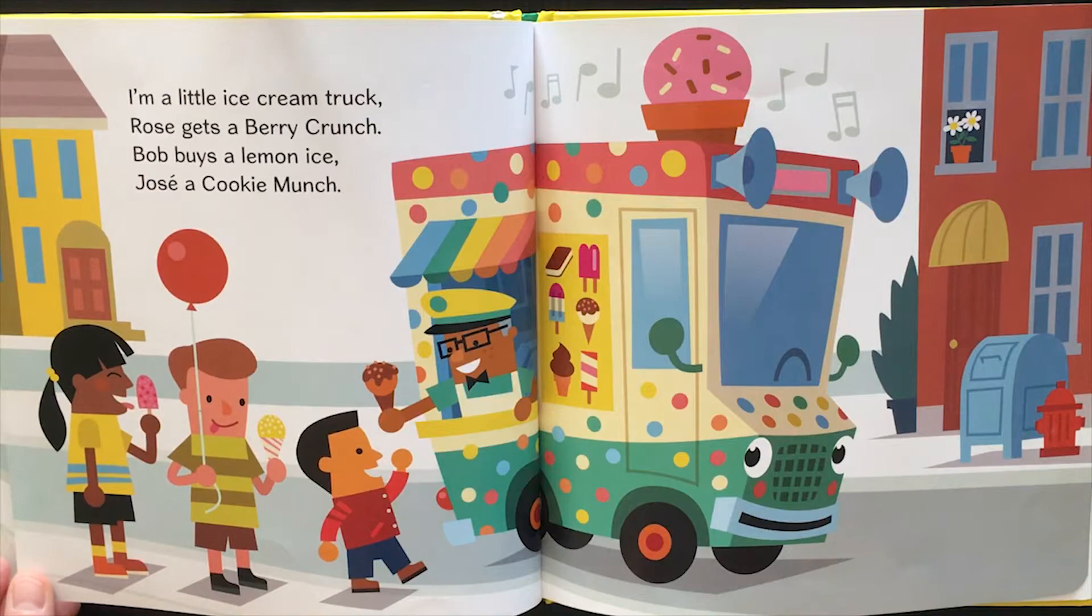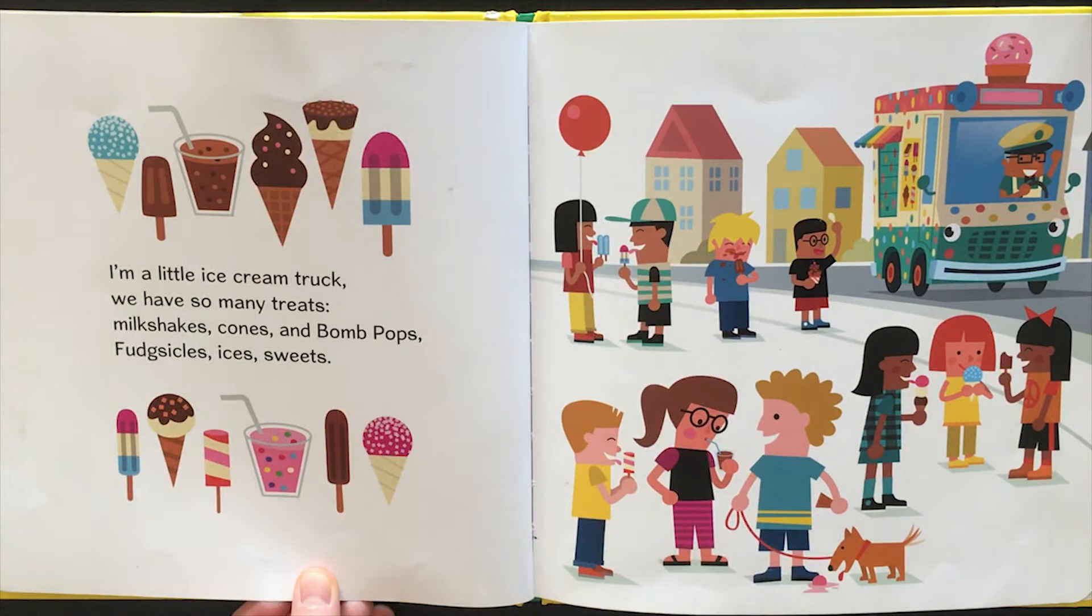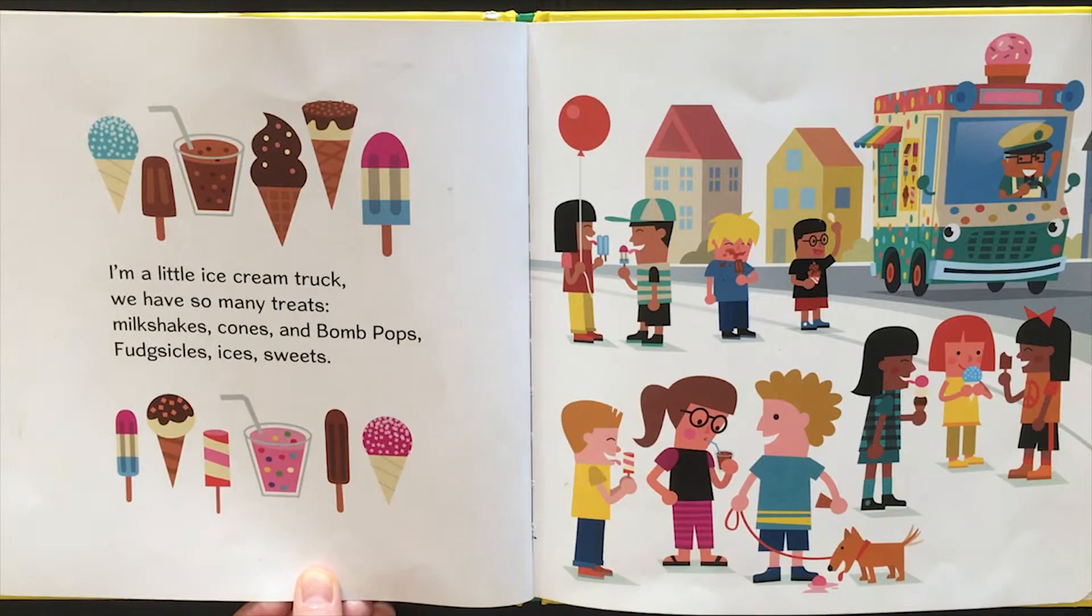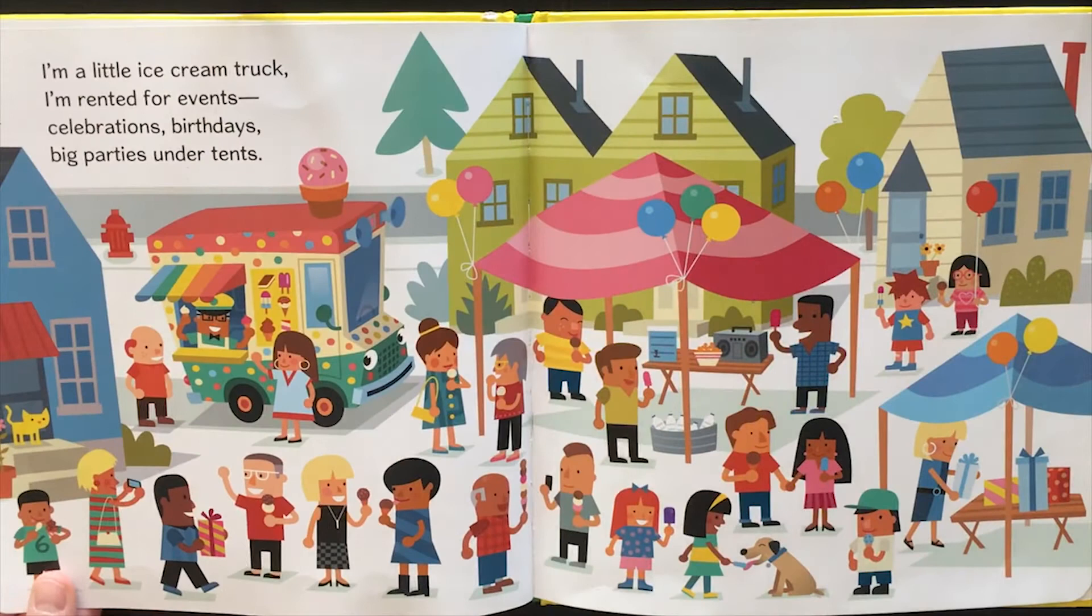I'm a little ice cream truck. Rose gets a berry crunch. Bob buys a lemon ice. Jose a cookie munch. I'm a little ice cream truck. We have so many treats. Milkshakes, cones, and bomb pops. Fudgesicles, ices, sweets.